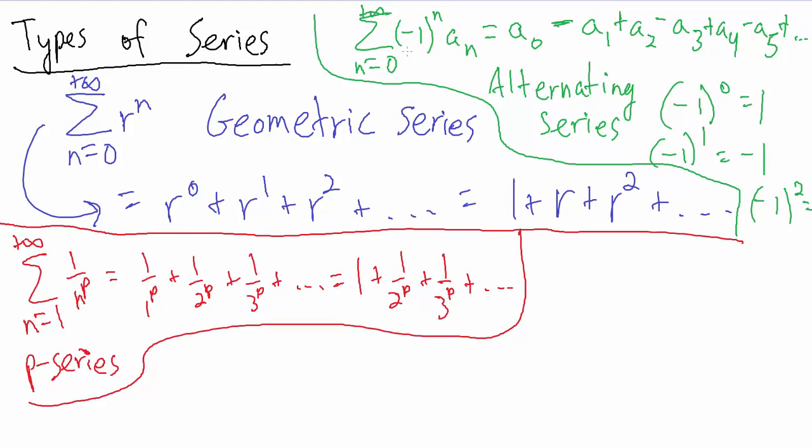Now, again, we started this series at n equals 0. There's really no particular reason we have to. We could start at n equals 1, 2, 3, 4,000, and so on and so forth.